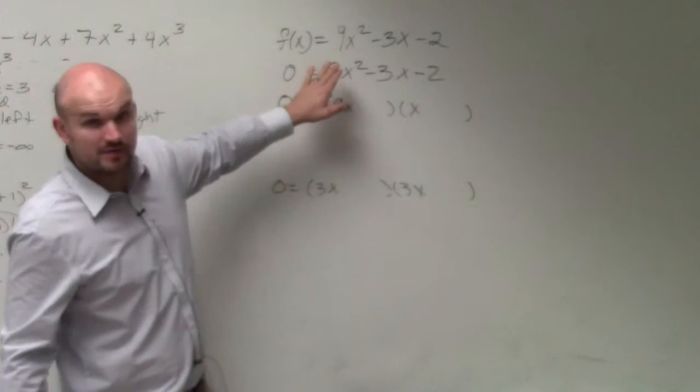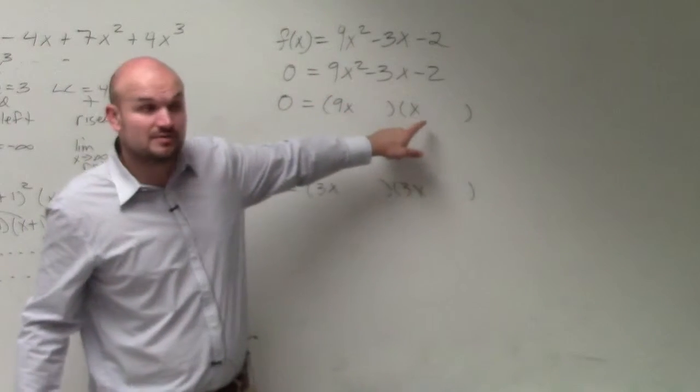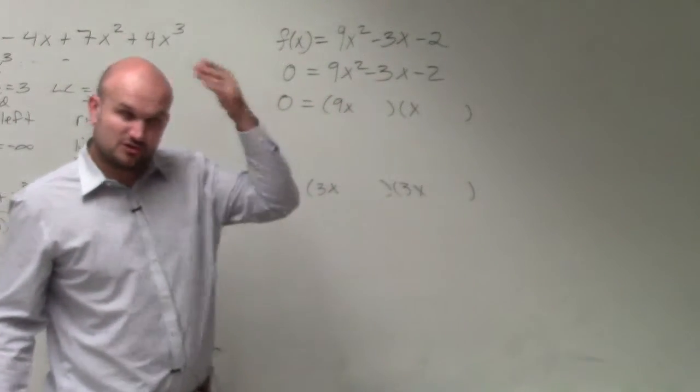Right? 3x times 3x gives you 9x squared. Or 9x times x gives you 9x squared. Everybody agree with me? So there's only two options we're dealing with.